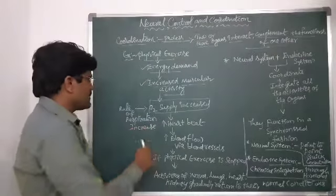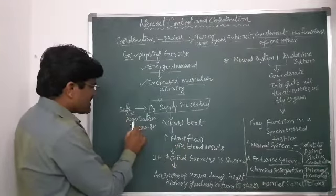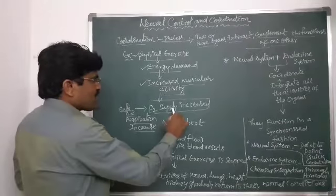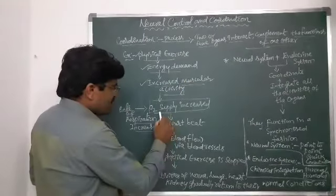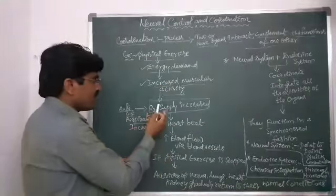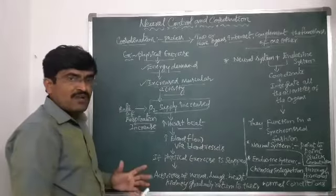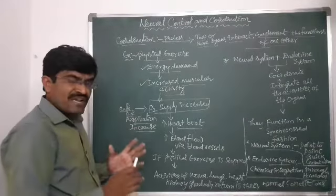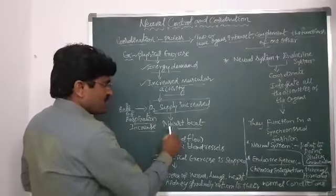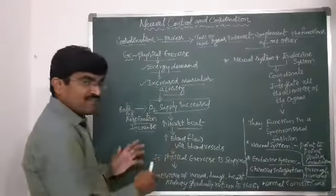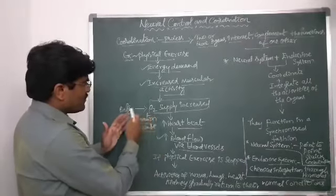When oxygen supply increases, the rate of respiration also increases automatically. Since the muscles need more energy, we need more oxygen supply, so respiration increases. Automatically, the heartbeat also increases to pump blood more effectively, because blood plays a major role in transporting oxygen to every tissue in the body. As heartbeat increases, blood flow through blood vessels also increases.